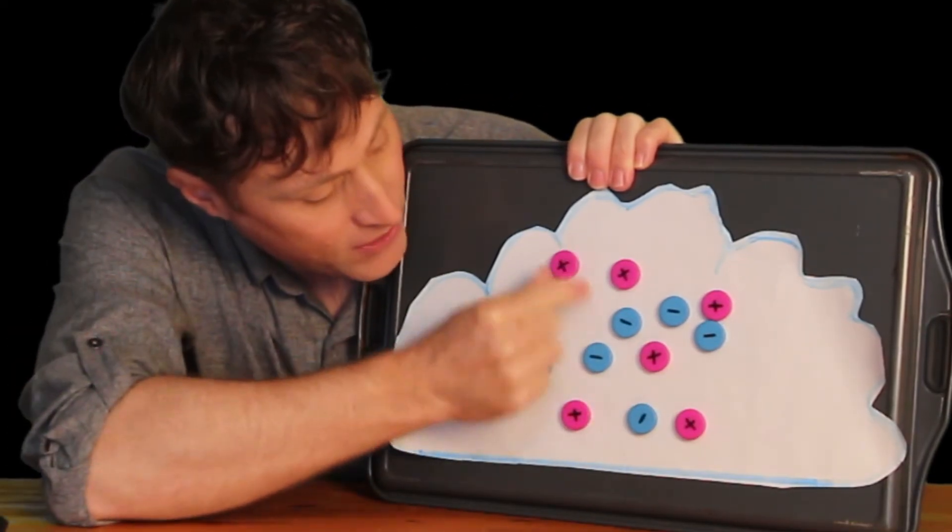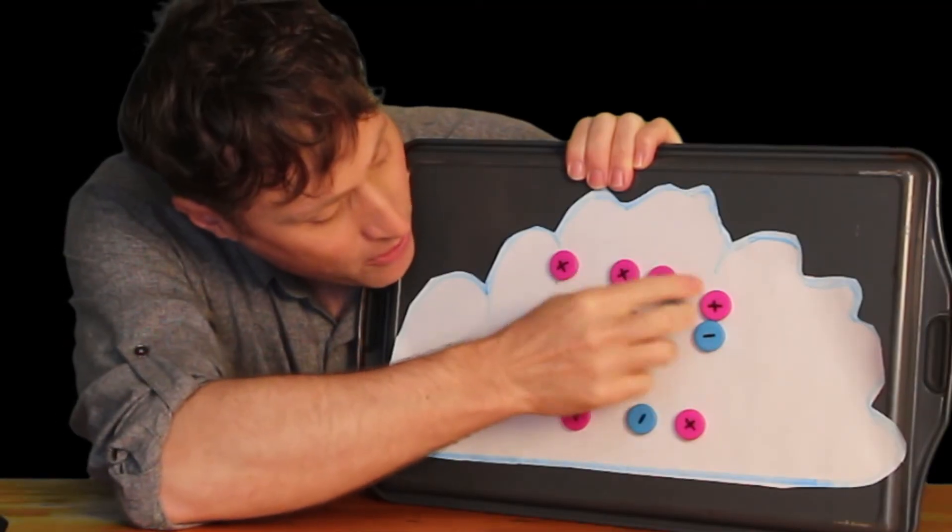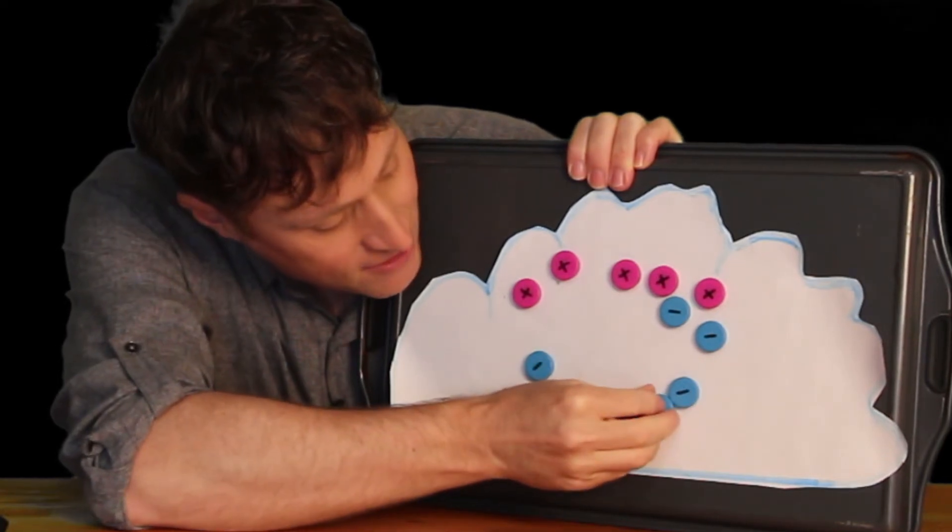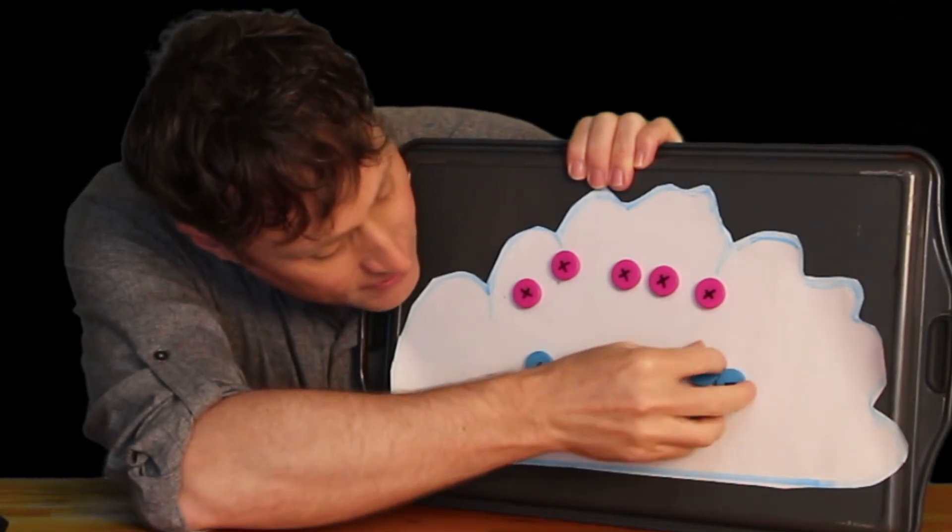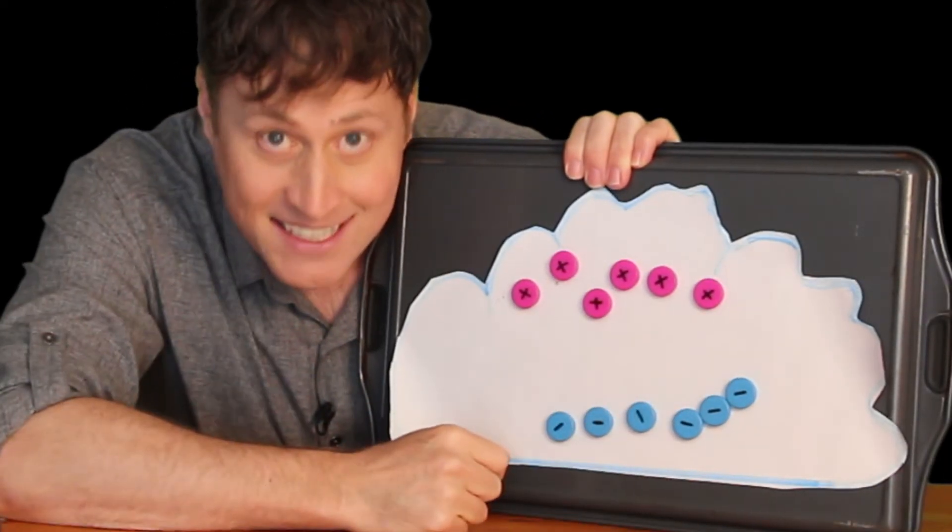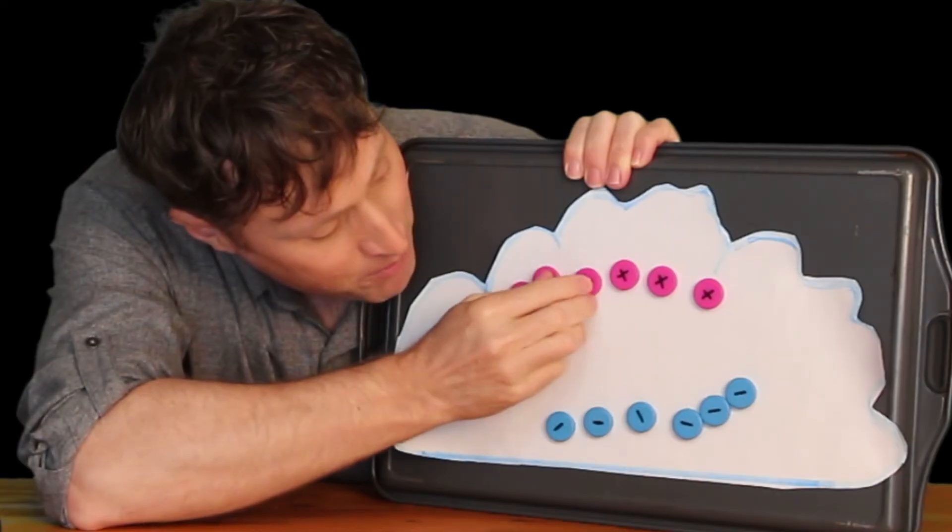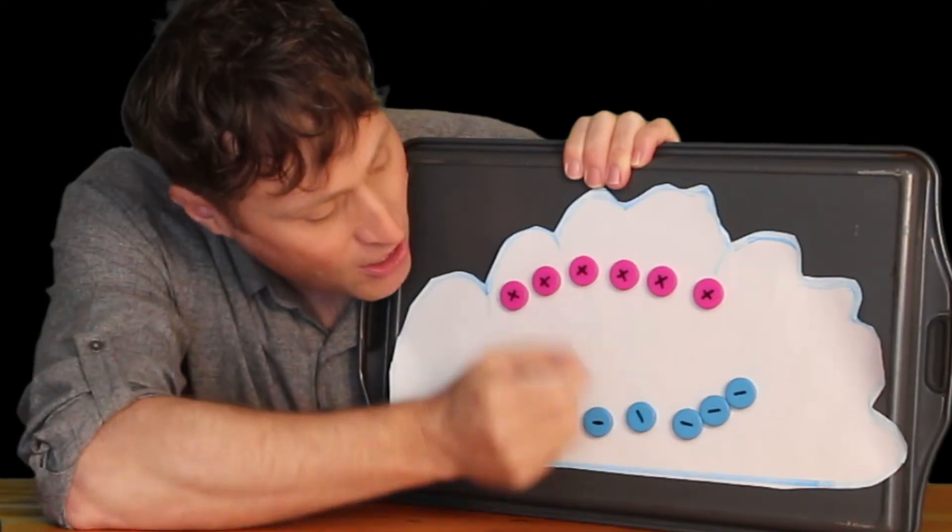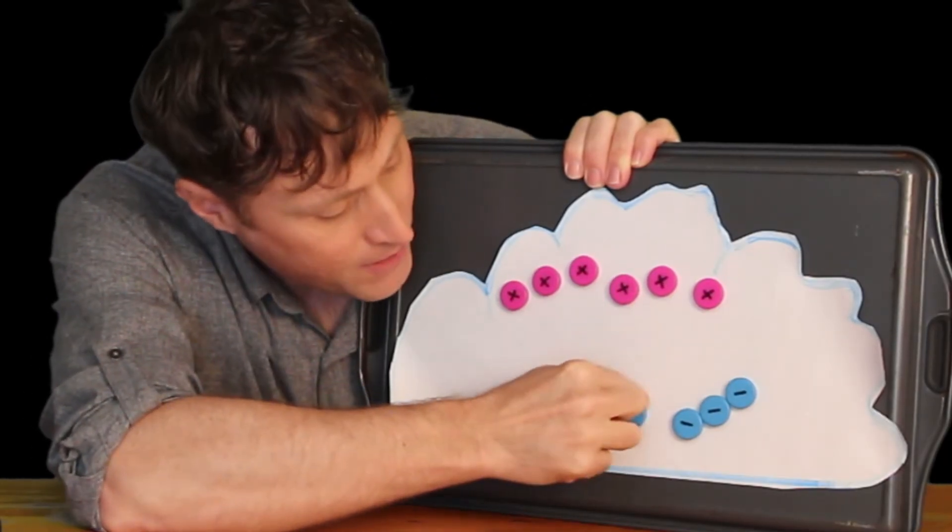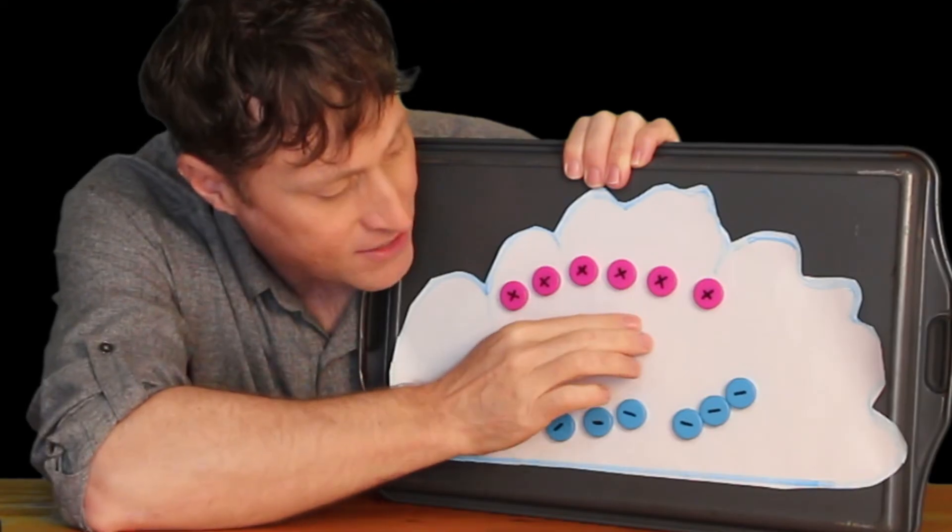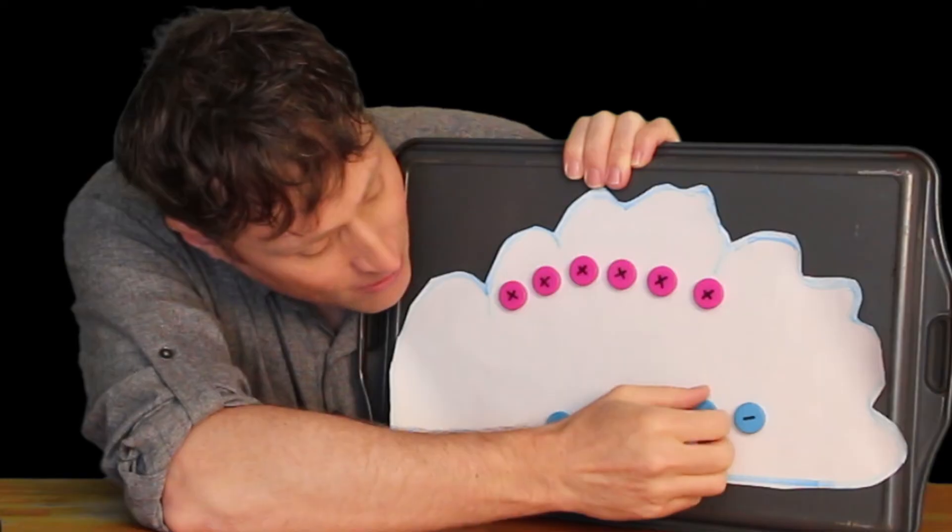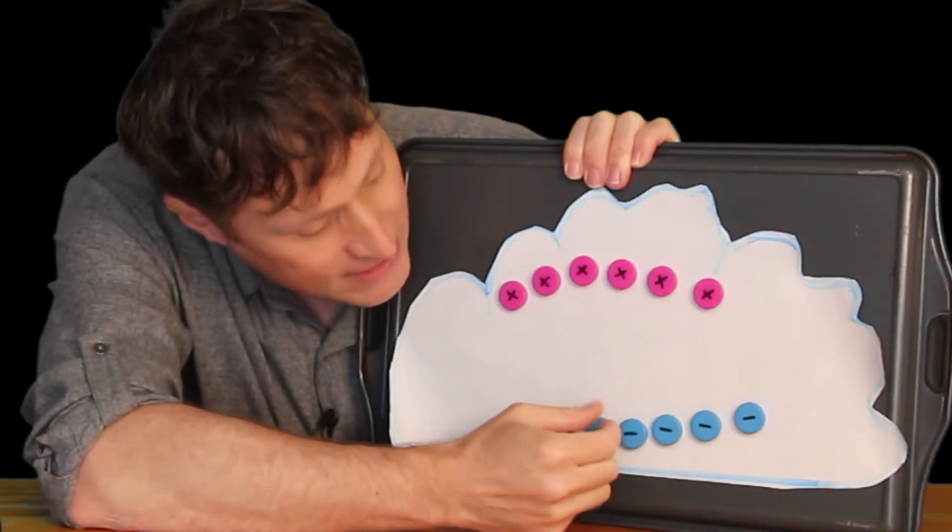Now what happens is the lighter particles start moving up, and the lighter particles are positively charged. And the heavier particles get a negative charge, and because they're heavier, they start moving down. So they start being all separated because of density, right? The lighter stuff goes up, the heavier stuff goes down. Normally a positive and negative would be attracted to each other, like they are with magnets, but the storm keeps everything separated.